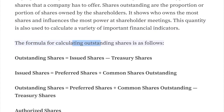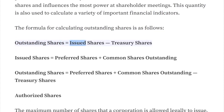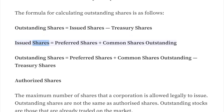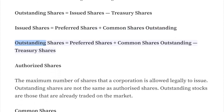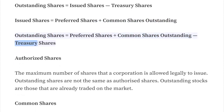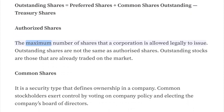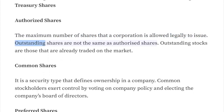The formula for calculating outstanding shares is as follows: outstanding shares equals issued shares minus treasury shares; issued shares equals preferred shares plus common shares outstanding. Authorized shares are the maximum number of shares that a corporation is legally allowed to issue. Outstanding shares are not the same as authorized shares.